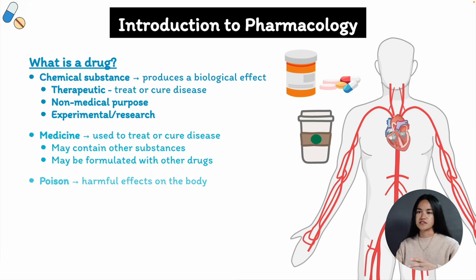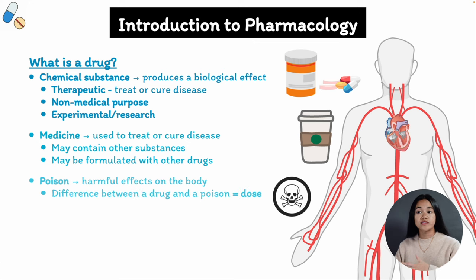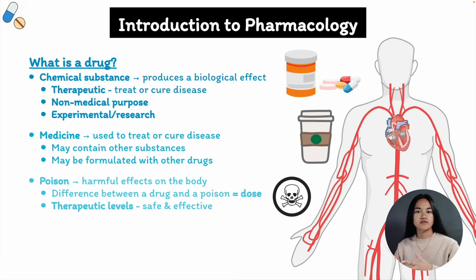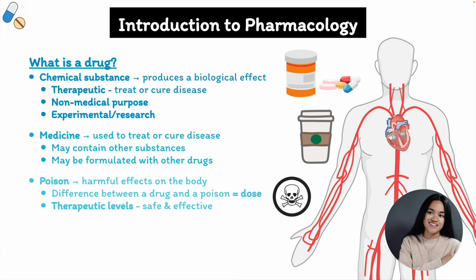Another example of something we might consider a drug is a venom or a toxin, because these substances produce a biological effect on a living organism. A poison is a substance that causes a harmful effect on the body. The difference between a drug or medicine and a poison might be in the dose — if a substance is taken at therapeutic levels it's very safe and effective, but if taken in overdose it can lead to dangerous outcomes such as liver damage and failure.